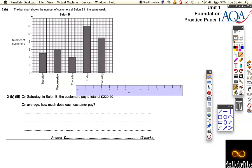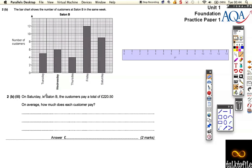Let's go to the last question. The last question now says, on Saturday, in Salon B, the customers pay a total of £220.50. On average, how much does each customer pay? So on Saturday, we know there's 9 customers. So if Saturday is equal to £220.50, if we divide that by 9, which I'm just going to tap into my calculator, £220.50, let's divide that by 9, I get £24.50. So each customer, on average, pays £24.50, which I did the total by how many customers are. Two marks. I'll make that the end of the question.